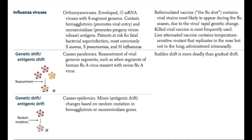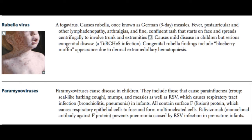When we talk about influenza viruses, we discuss genetic shift and genetic drift. Genetic shift is a reassortment of the viral genome, such as when human flu A virus recombines with swine flu A virus within a certain host, causing reassortment of the segmented genome — this leads to pandemic forms of the flu virus. Genetic drift involves changes in minor antigens based on random mutation and is more associated with small epidemics. Remember: sudden shift is more deadly than gradual drift.